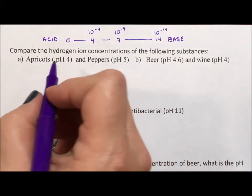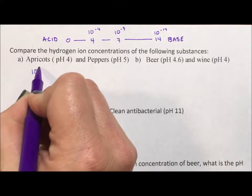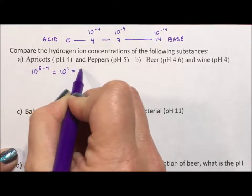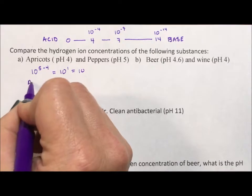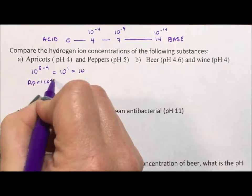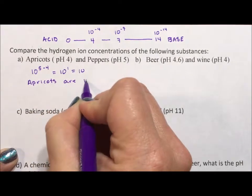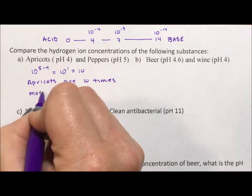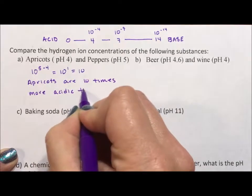So to compare apricots and peppers, I take 10 to the 5 minus 4 which is 10 to the 1 or 10 and I can say that apricots are 10 times more acidic than peppers.